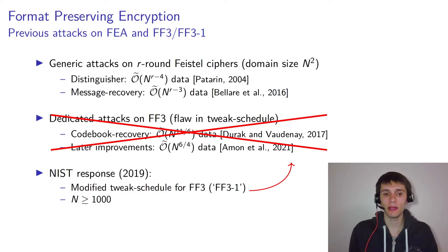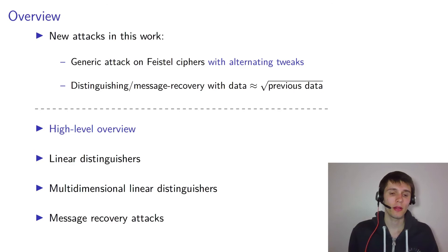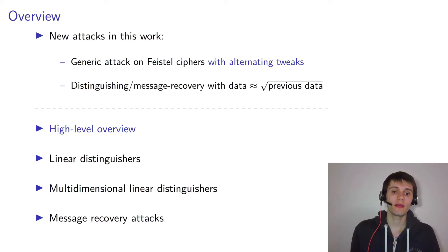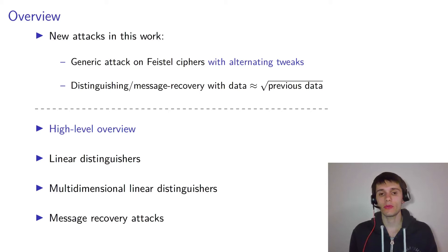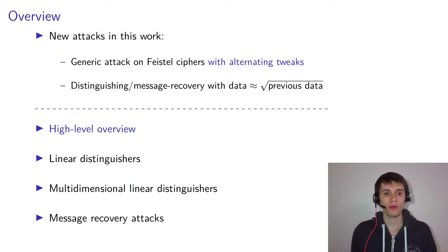The attacks in this work are generic in the sense that they apply to Feistel ciphers in general, but I will use the specific property that the tweak alternates. The data complexity of these attacks will be about the square root of the data complexity of previous attacks — quite a big improvement. In fact, it will show that the minimum domain size requirement of 1 million is no longer sufficient.